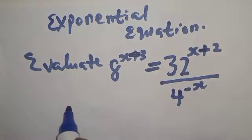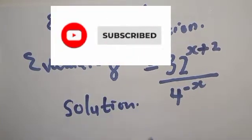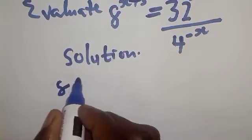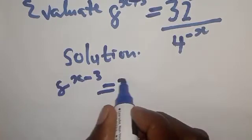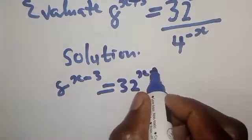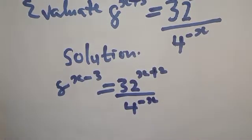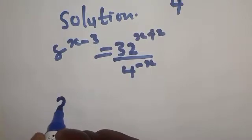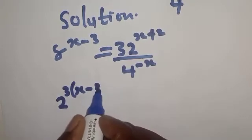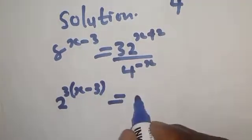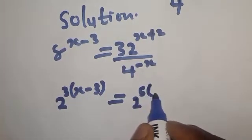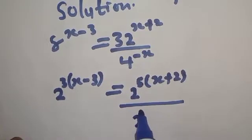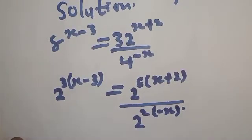So we have 8 raised to power x minus 3 is equal to 32 raised to power x plus 2, over 4 raised to power minus x. Now 8 can be written as 2 raised to power 3, so we have 2 raised to power 3 into x minus 3. Then 32 can be expressed as 2 raised to power 5 into x plus 2, over 4, which can be expressed as 2 raised to power 2, into minus x.